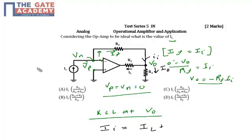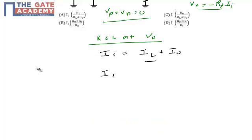Where IL is the current which we need to find out, so our IL will be equal to II minus I0.